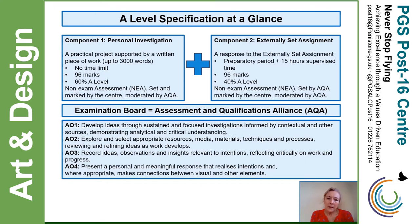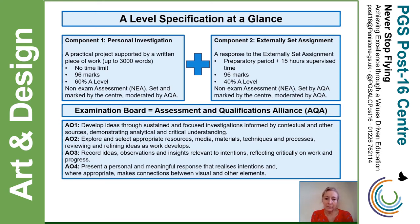This slide shows the A-Level specification at a glance. We do the AQA exam board and this is composed of two components. Component one: personal investigation. Component two: externally set assignment — typically referred to as coursework and exam. Coursework is worth 60% and exam is worth 40%. The assessment objectives are very similar to those done at AQA at GCSE level.